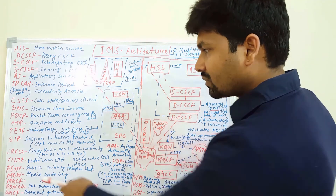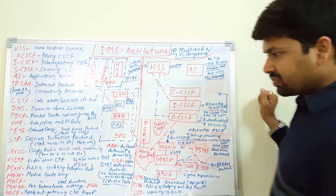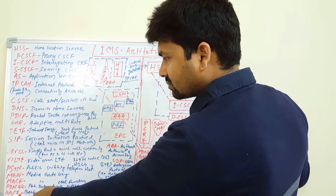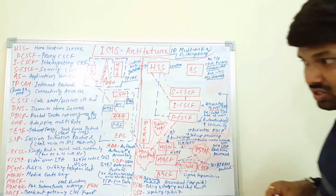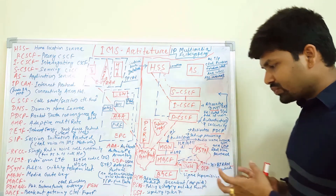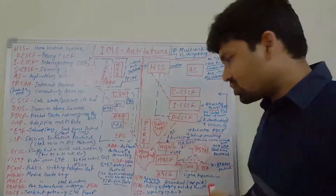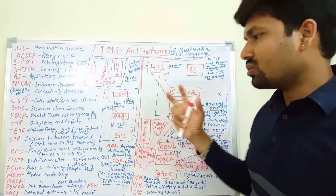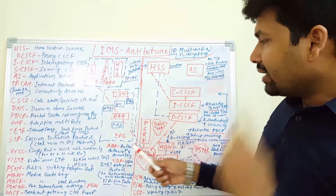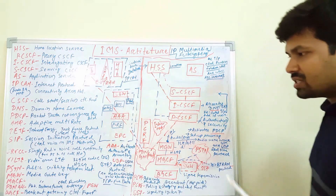H.264 is used for VoIP services in LTE. The PDN gateway is the packet data network gateway. BGCF — breakout gateway control function — is used when connecting to other areas or other countries, requiring a breakout session to communicate with other entities. AAA — authentication, authorization, and accounting — is in the EPC.